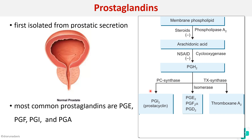The synthase will produce PGI2 which is prostacyclin. The isomerase enzyme will produce PGE2, PGF2-alpha, and PGD2, and the thromboxane synthase enzyme will produce thromboxane A2. All these are the prostaglandins. Remember they are produced from membrane phospholipids by the action of two enzymes: phospholipase A2 and cyclooxygenase.